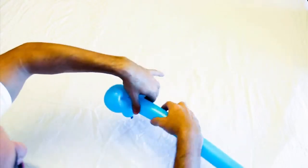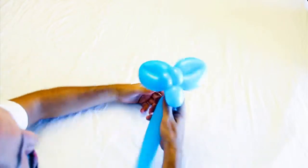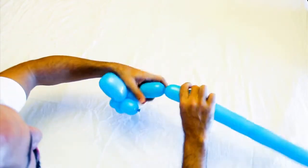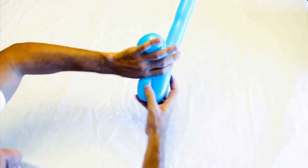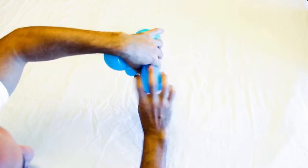I make a one inch bubble for the neck, then I'm going to make two bubbles that are about two inches a piece, but you're going to make one, fold this over, and twist it together.